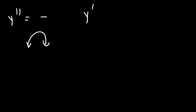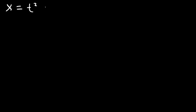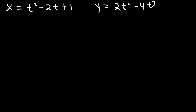Now, if the second derivative was negative, then it would be concave down. But if it's positive, then it's concave up — keep that in mind. Now for the sake of practice, let's work on another problem. Let's say that x is equal to t squared minus 2t plus 1, and let's say that y is equal to 2t squared minus 4t cubed. Let's find the slope and concavity at t equal to 3. Feel free to pause the video and try this problem.